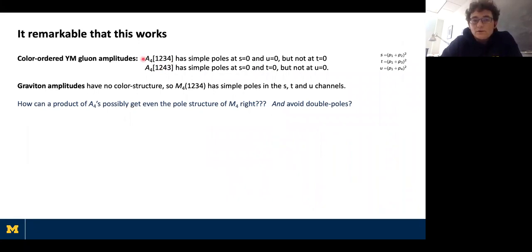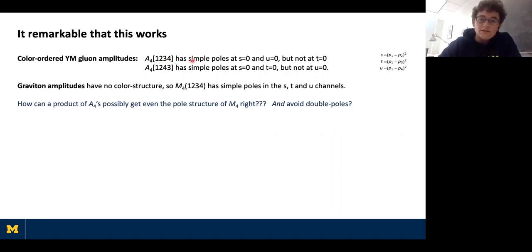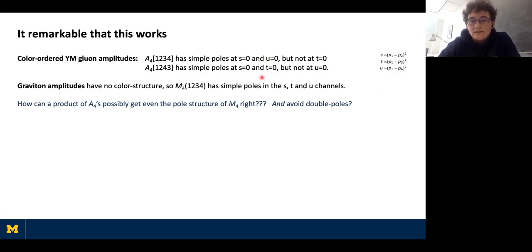In d dimensions you would get one scalar (the dilaton) and the antisymmetric two-form, as well as the gravitational polarizations. Why is it remarkable that this works? The color-ordered rules for partial amplitudes are that they can only have poles in lines adjacent in the ordering — you write down Feynman diagrams with lines ordered as in the color ordering, not allowing any lines to cross. Therefore the one two three four color-ordered amplitude has simple poles at s=0 and u=0 but not at t=0, and flipping four and three interchanges u and t.